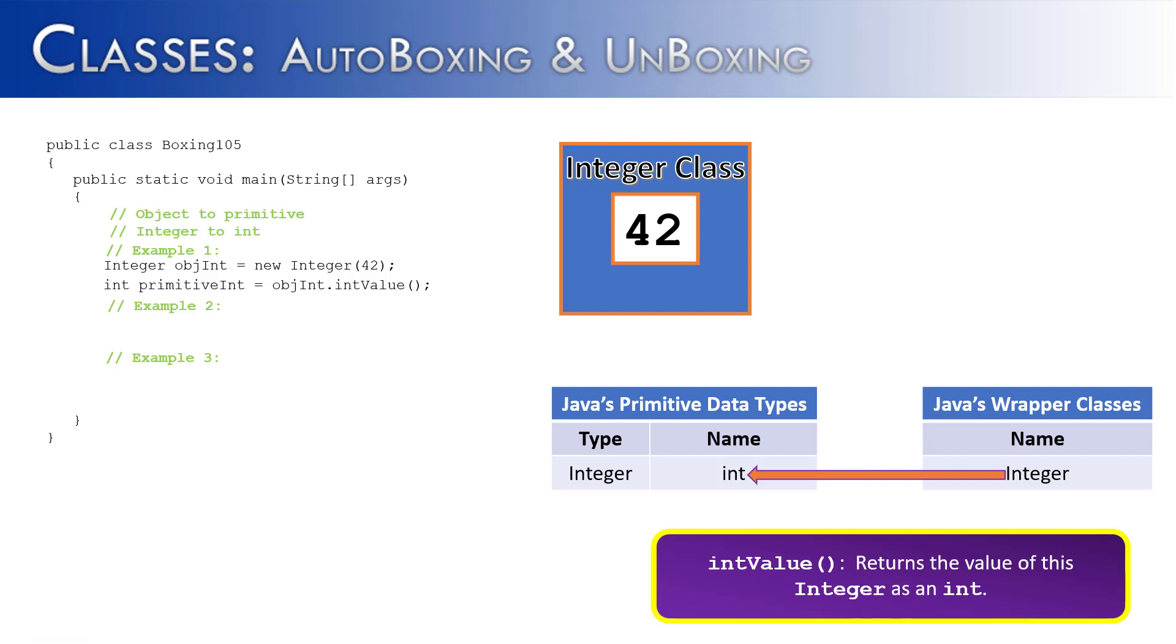Now that we've spent quite a bit of time looking at converting primitives to objects using autoboxing, let's look at the opposite, converting objects to primitives.